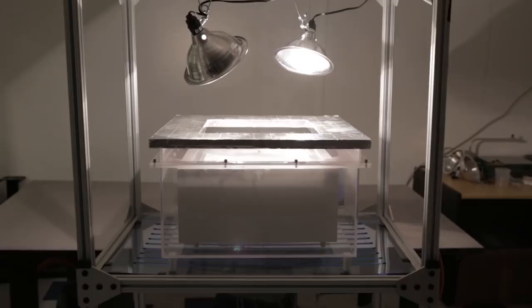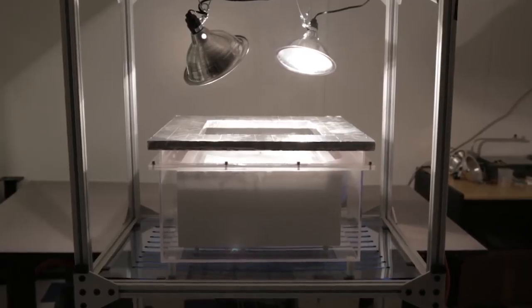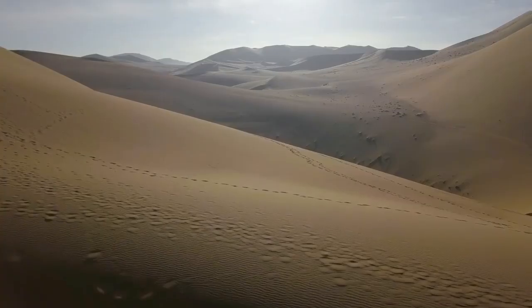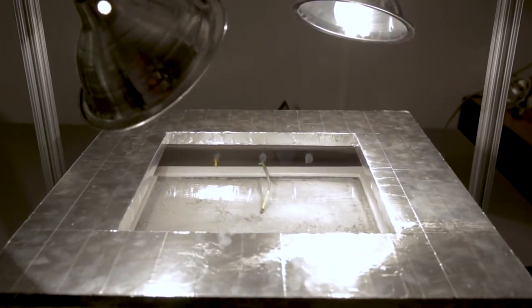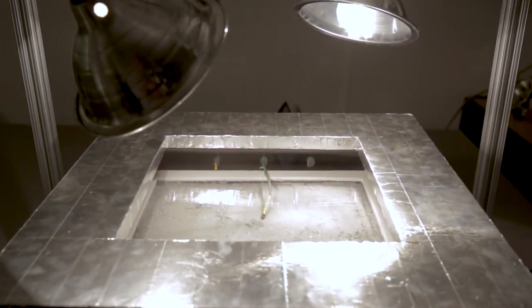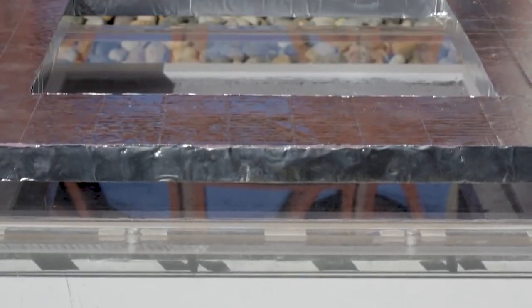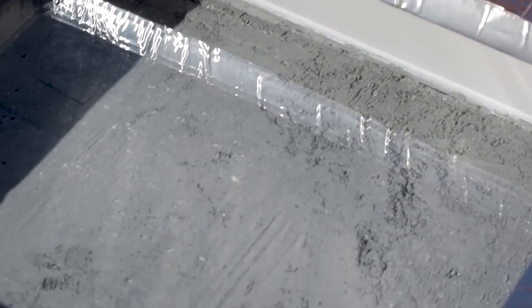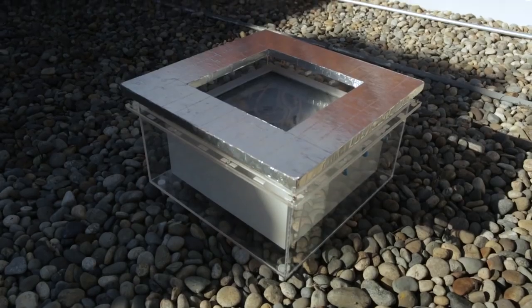In our latest work we have the next generation water harvester. This can work out in the desert where there is no supply of energy aside from sunlight. What it does is that it collects water from the atmosphere at very dry conditions and then releases it so we can harvest it as liquid water by using only energy of sunlight.